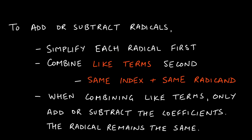Now, if we want to add or subtract radicals, we first simplify each radical, and then once it's in simplest form, we combine like terms. Like terms in radical land means they have the same index and the same radicand — both must be identical. Just like with polynomials, when we combine like terms we only add or subtract the coefficients; the radical, the radicand, and the index all stay the same.